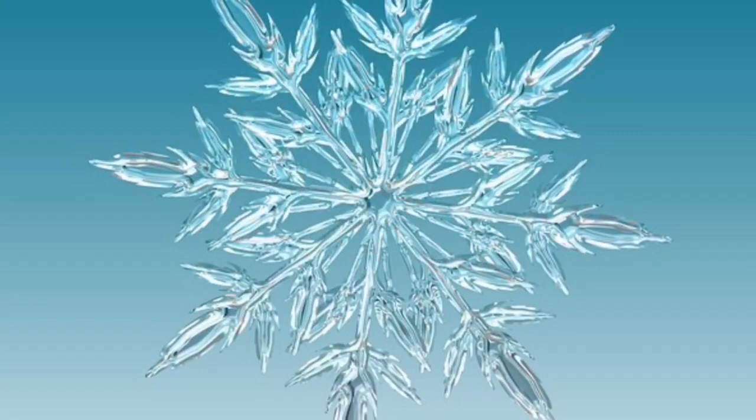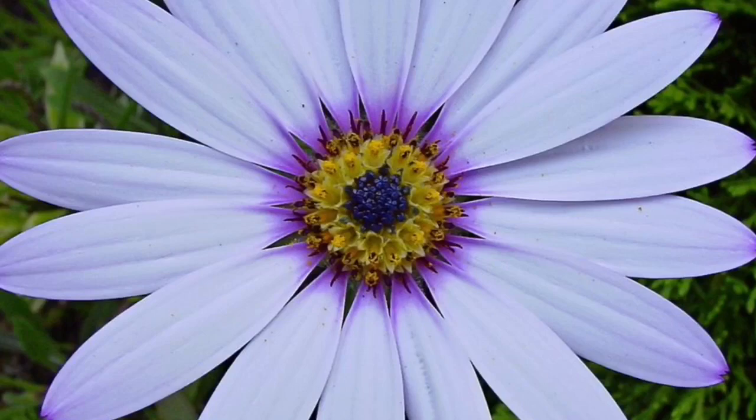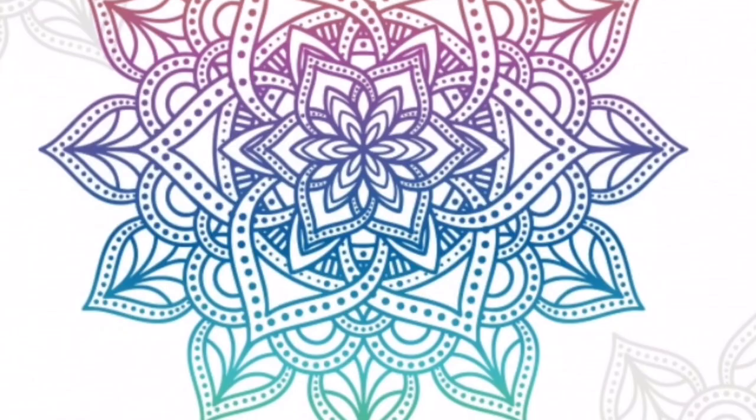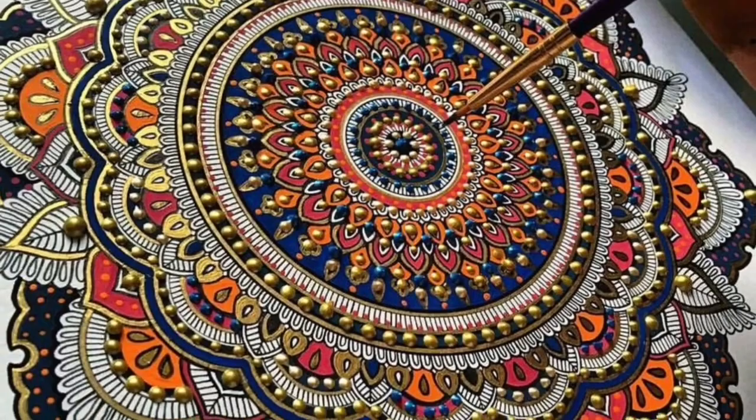Radial symmetry can be found in nature like this snowflake or in flowers. Mandalas have radial symmetry too. These intricate designs symbolize the universe and are often used in meditation practice.